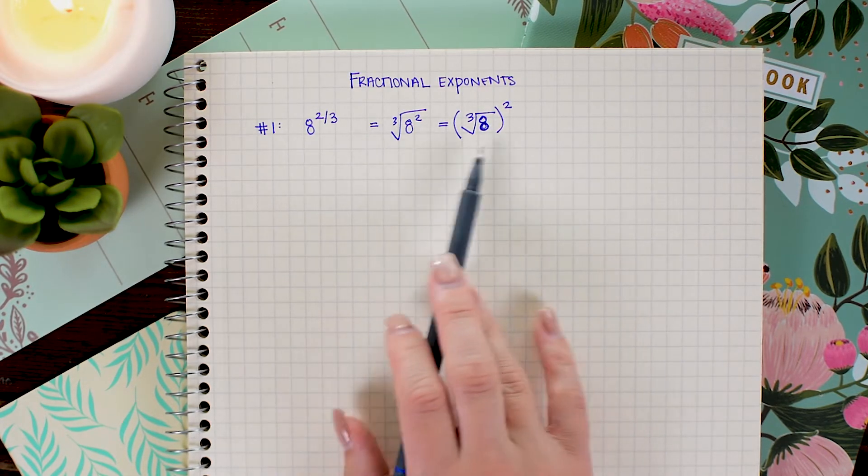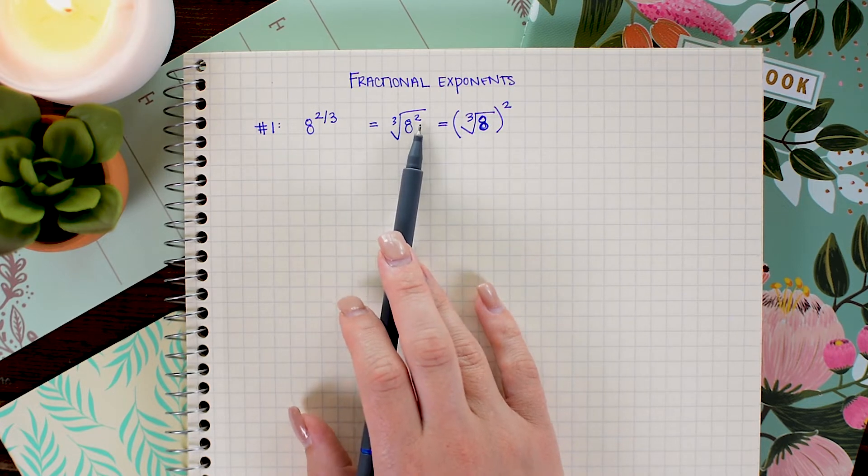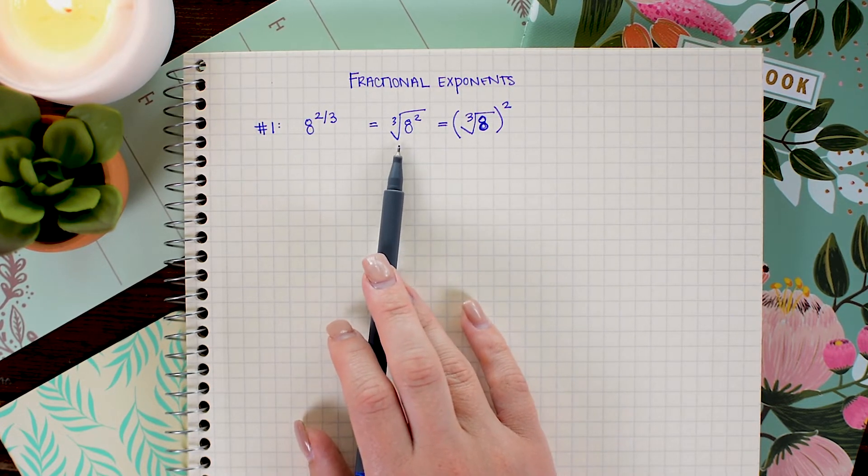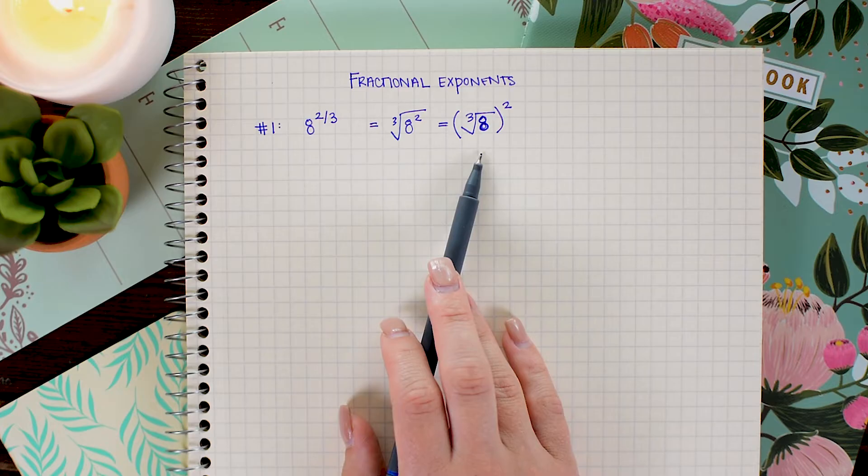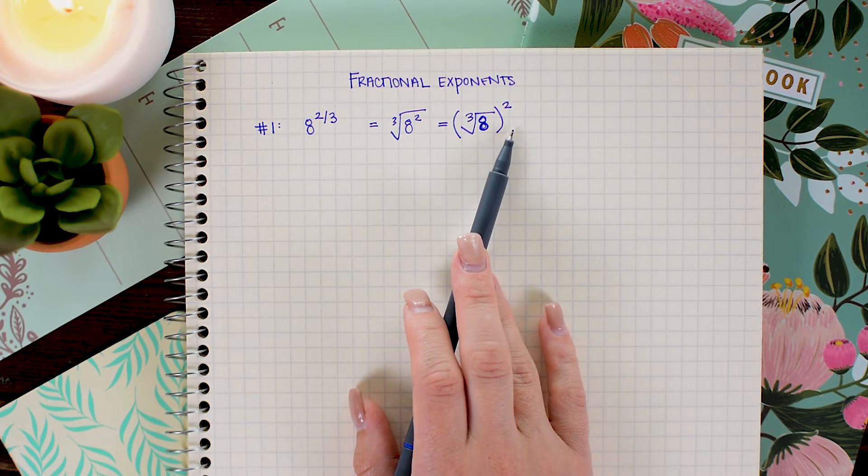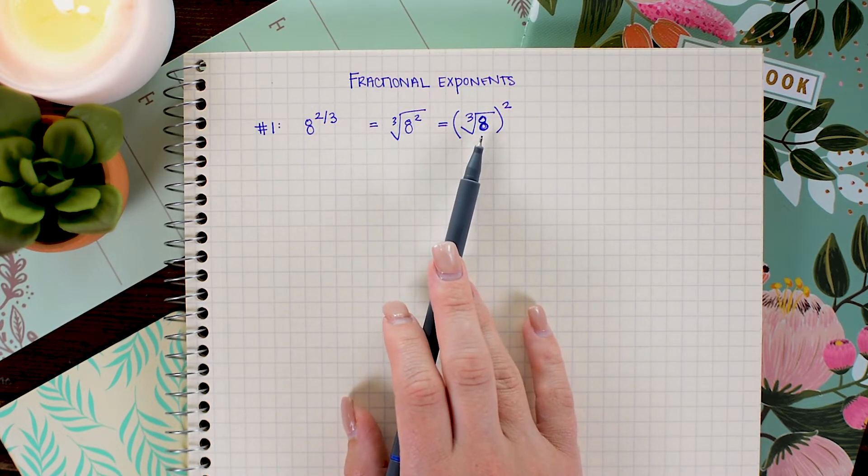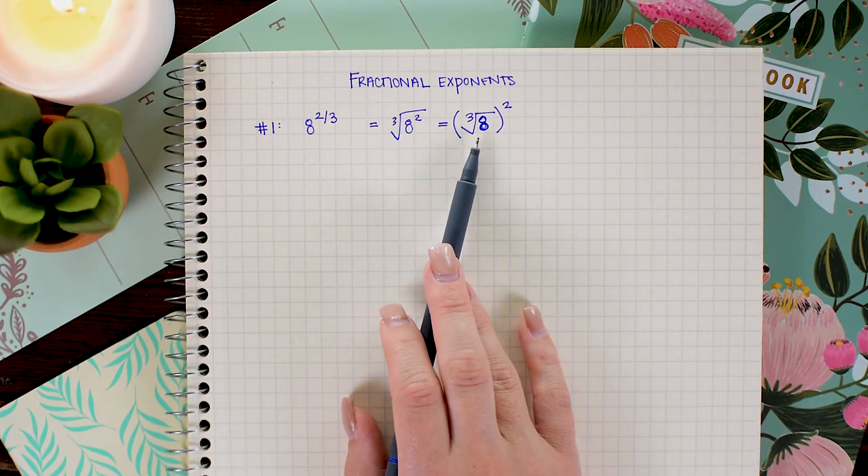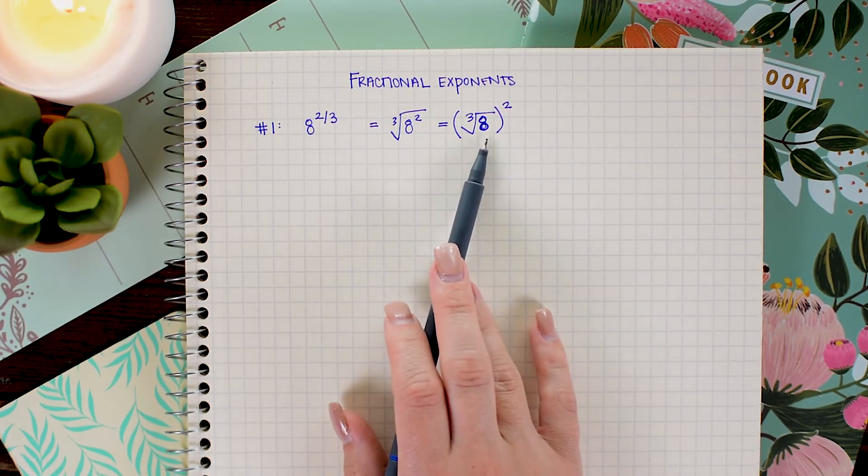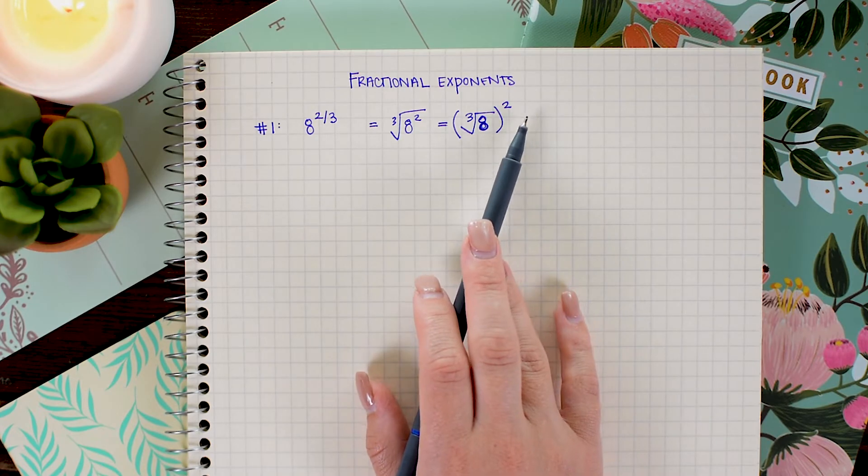For example, let's go ahead and simplify this. Now I have the choice of either squaring the 8 first and then taking the cube root, or I can take the cube root of 8 first and then square. Again, they're going to come out exactly the same, so it doesn't really matter which way I start, but I do think it's easier if you're doing mental math to take the cube root of 8 first, since that's 2, and then square it to get us to 4.